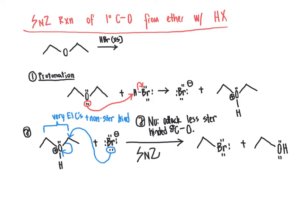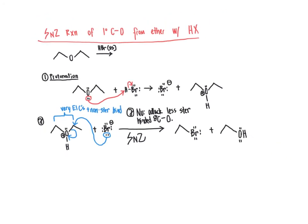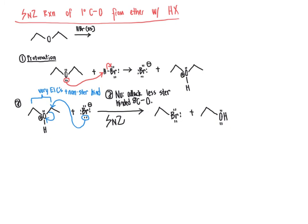At this point you might think the reaction is done, since the organic products have no formal charges and appear stable. But keep in mind from Chapter 11 that alcohols react with halo acids in nucleophilic substitution reactions. Due to the excess of HBr available, the alcohol we've created will go forward and react with a second mole of HBr.